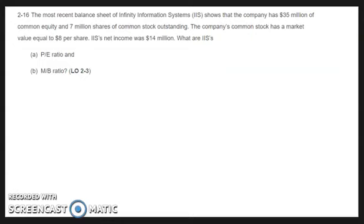The most recent balance sheet of Infinity Information Systems, IIS, shows that the company had $35 million of common equity and 7 million shares of common stock outstanding. The company's common stock has a market value equal to $8 per share. IIS's net income was $14 million. What are IIS's P-E ratio and market-to-book ratio?